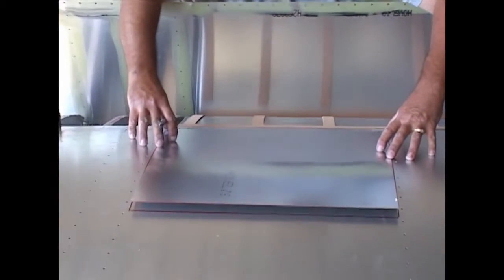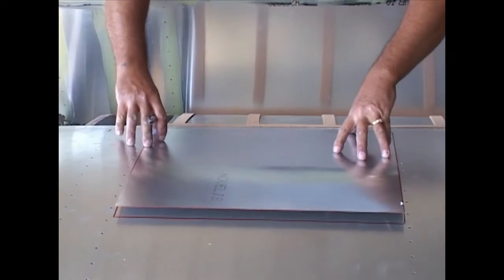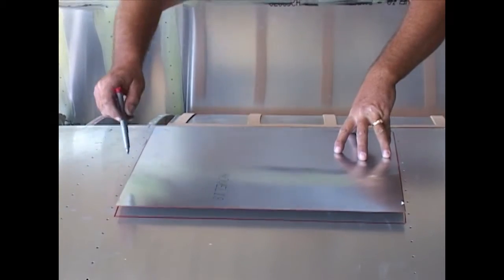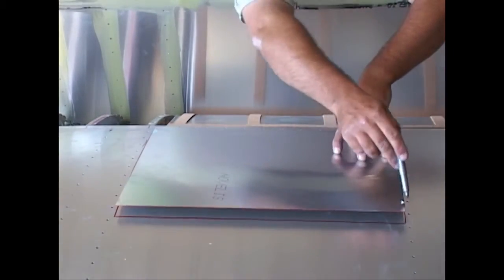The cover is used as a template to draw out the section of top wing skin that needs to be removed.